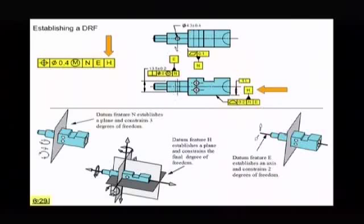You notice also what I'm doing here is I'm always relating the datum features. You see, N was called off first. I started off as flat. Then I said E. Now when I call off E, I tell you the relationship of E to N. And then when I say H, I say the relationship of H to E and to N, or to N and to E in that order.